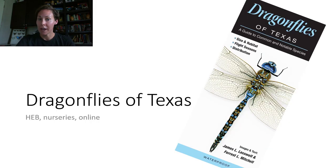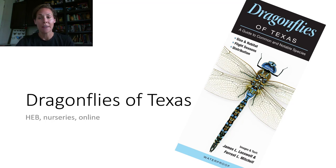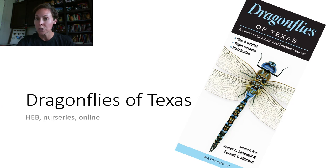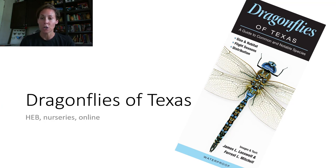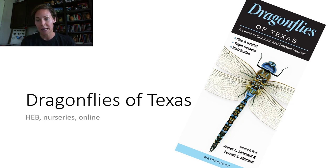Before we get started I would like to let you know about a resource that is really excellent if you are into navigating and identifying some of the common dragonflies in Texas. That is a field guide called Dragonflies of Texas. I have been able to find this field guide at HEB at the checkout line, at your local nursery, and I'm sure you can find it online through Amazon. It's a fabulous resource that provides a good pictorial key of some of our common dragonflies and shows you the difference between the males and the females.